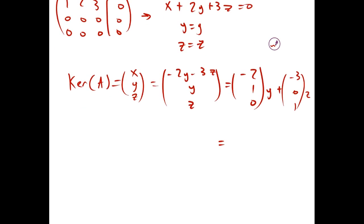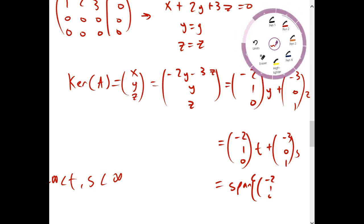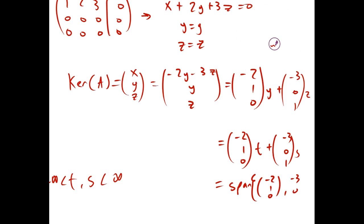And we can just write those as parameters t and s with t and s going from negative infinity to positive infinity. So, the kernel of A is the span of these two vectors. Span of negative 2, 1, 0, and negative 3, 0, 1.